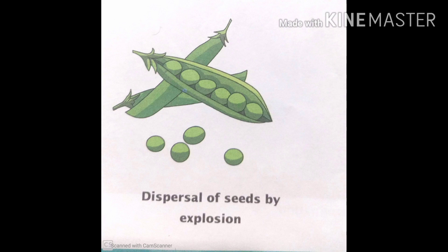Next is by explosion. Some plants fling or throw their seeds out once the fruit has ripened. This explosion occurs as a result of evaporation of water from the pods. Once the pods dry out, they expel the seed which are then carried by the wind or gravity to other places where they germinate.